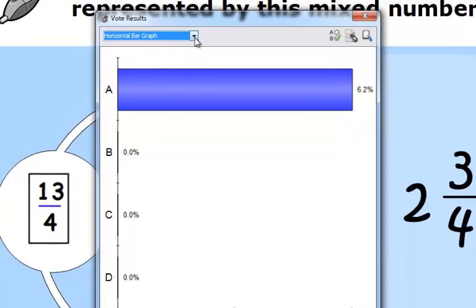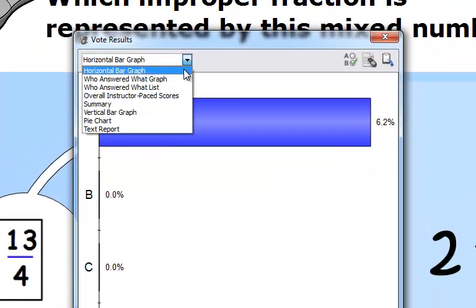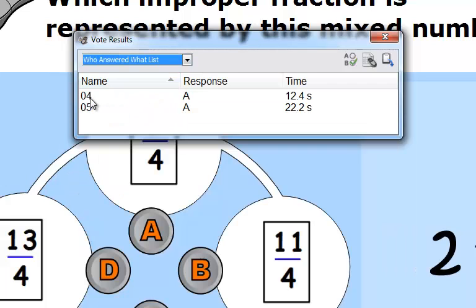You have different ways you can show your results. As a bar graph, you can actually see who answered what by clicking on this, and I can see the device name and their response.